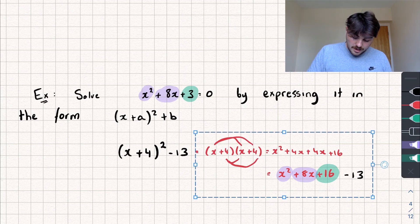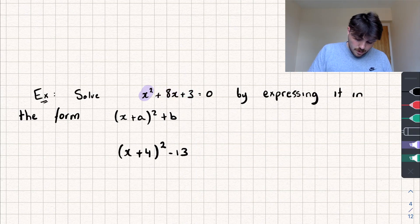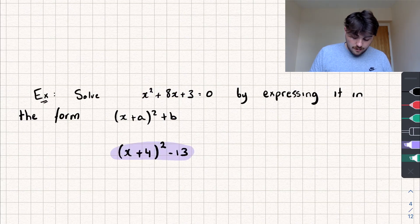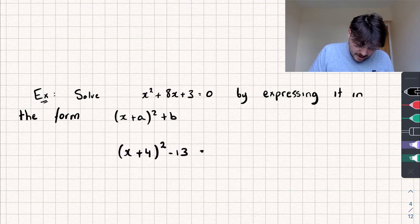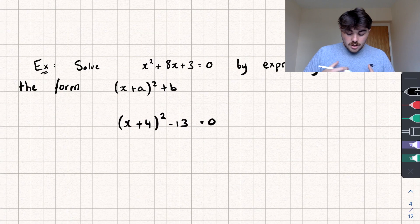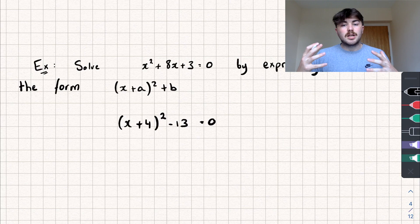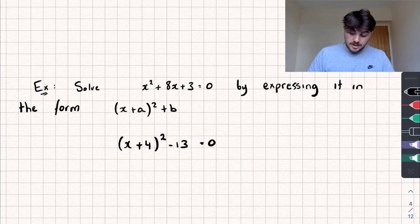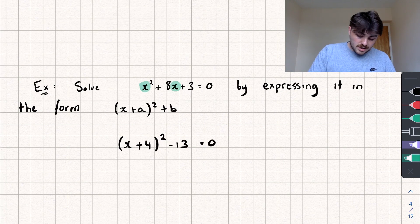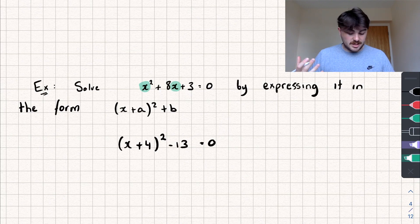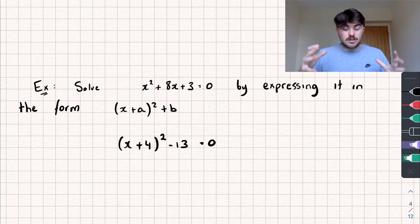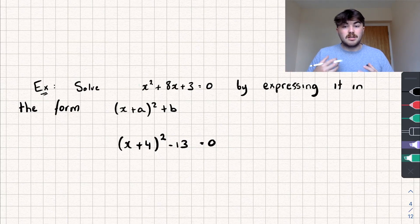We've expressed this in completed square form and it's equal to the left-hand side of the equation, so we can set it equal to 0. Now that we've completed the square, we can solve the quadratic — find the values of x — just by rearranging to make x the subject. Because of the form it's in, it's actually really easy to rearrange. When x is the subject, that gives us the values of x that make the equation equal 0.